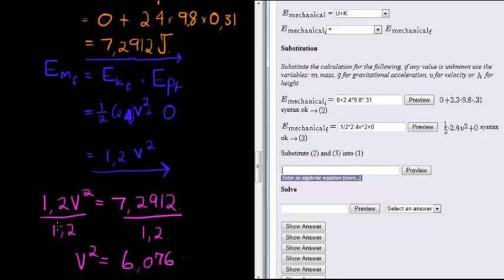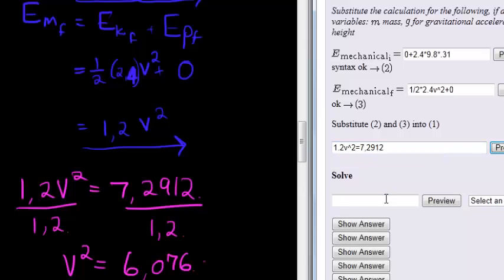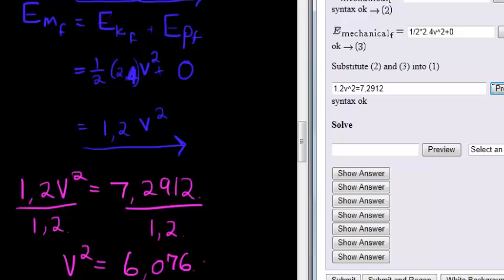And now we make these two equal to each other, and then we can use this step right here. 1.2 velocity squared is equal to 7.2912. That looks good.